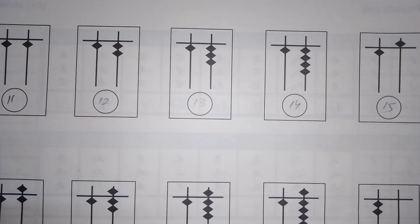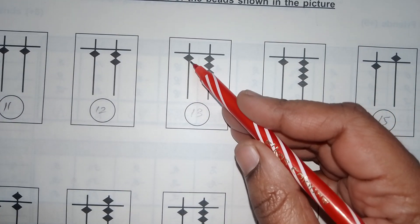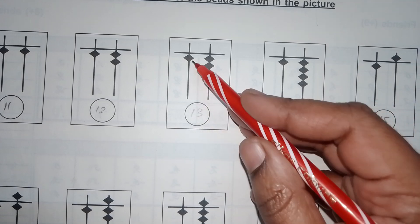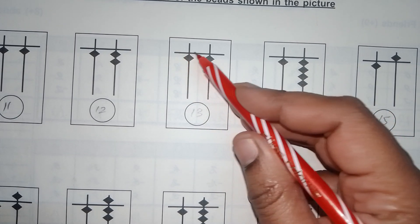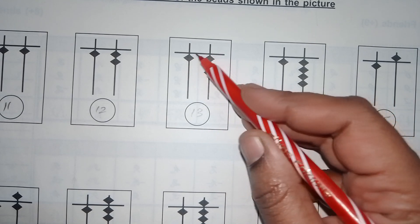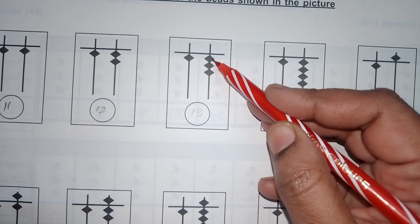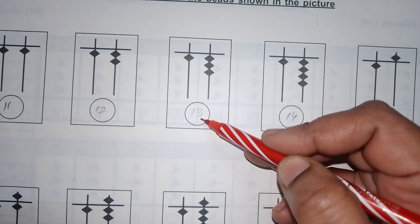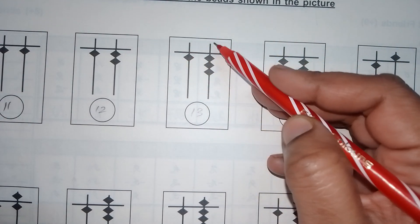Now the third picture. Here, 1 bit on the tens rod, so we write 1. On the units rod, below the middle bar, there are 1, 2, 3 bits — so 3 are there. The answer is 1-3 = 13. There is no upper bit here.